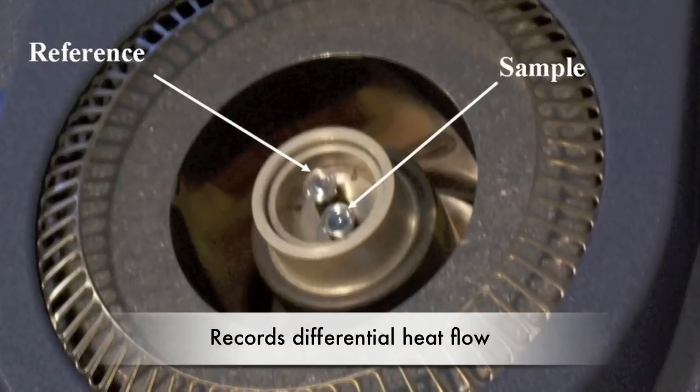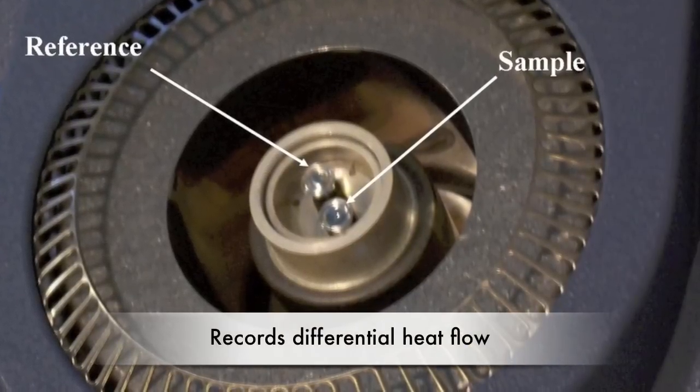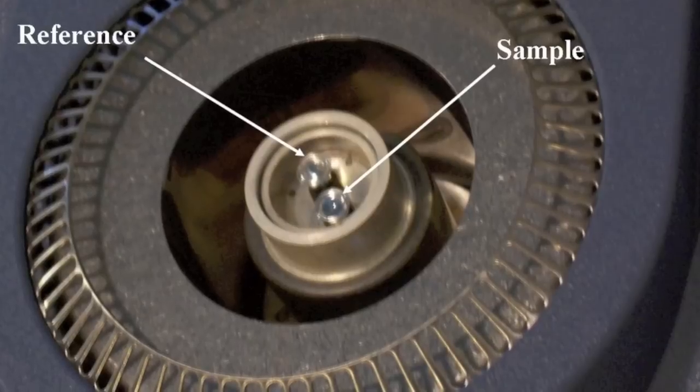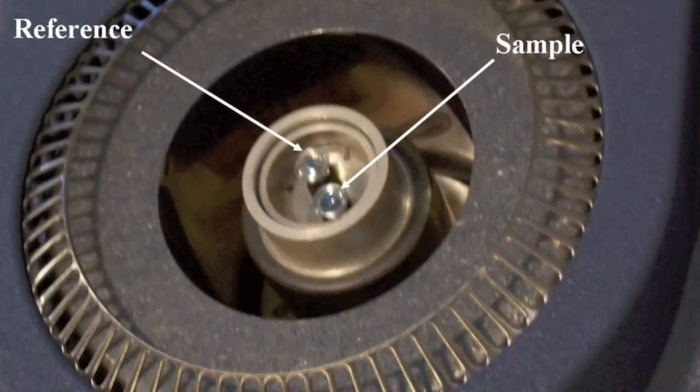The Q20 heat flux DSC works by trying to maintain the reference and sample pans at a constant temperature. But since the sample has a heat capacity, a differential heat flow is needed and recorded.